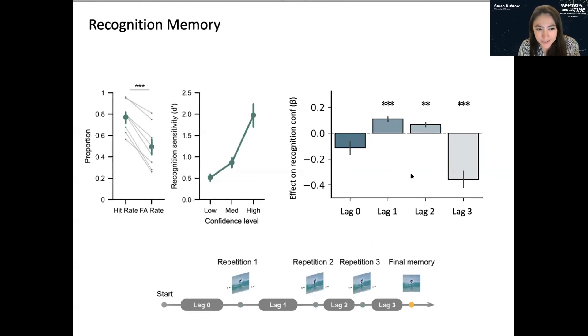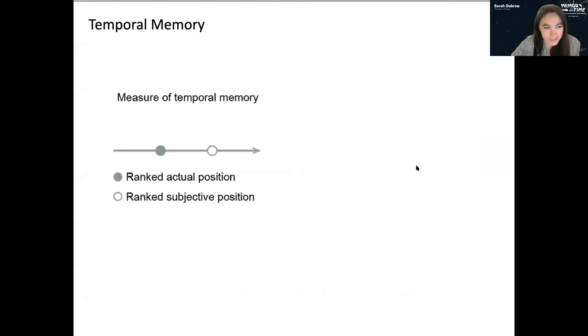Lag one and lag two were excitingly both significantly positive. And what that basically reflects is a spacing effect over these really long time scales. So the more spread out the repetitions were, the better for your recognition memory. And the last lag is basically just forgetting. So it's for recognition, how far from the last time you saw it to the time that you're tested. So there's a strong effect of forgetting there. And I like this graph just because it shows kind of all these classic memory effects in one.